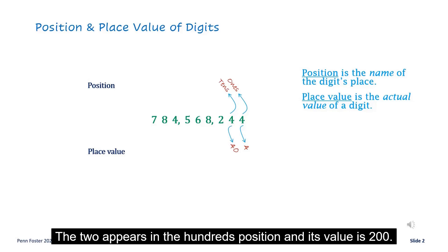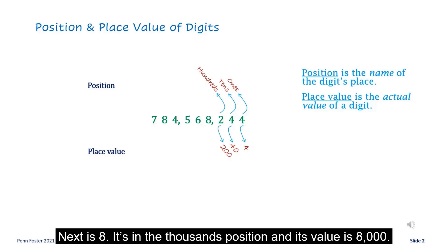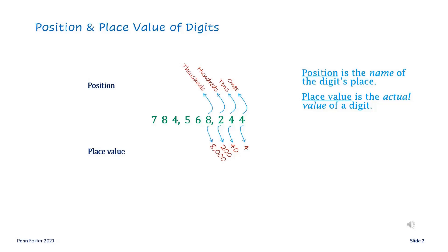The 2 appears in the hundreds position and its value is 200. Next is 8 — it's in the thousands position and its value is 8,000.